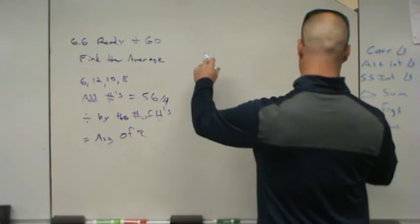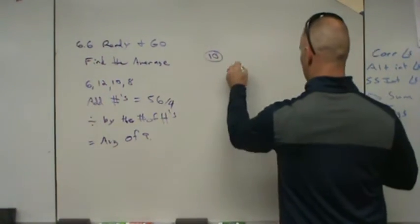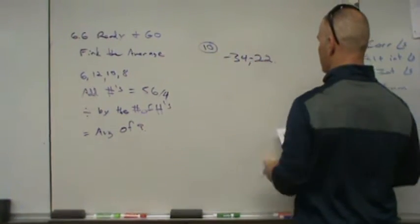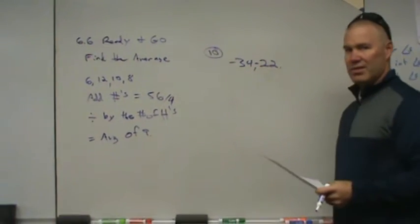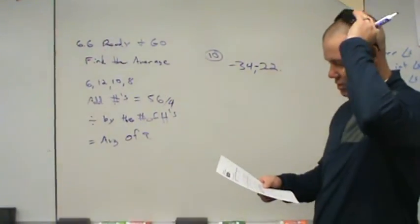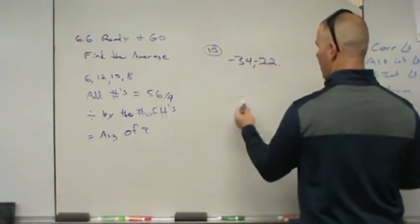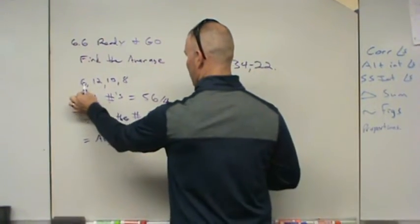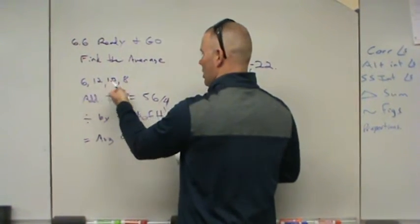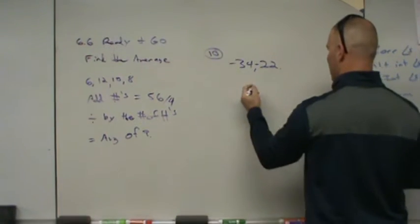What happens when we get to problem number 10, where you have negative 34 and negative 22? The process doesn't change just because you have a negative number. You still add the numbers together. The rule is: if you're adding numbers with a common sign, add them and keep the common sign.